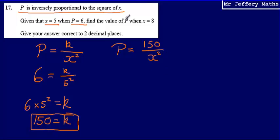So what we're asked to do is find the value of P when X equals 8. All that we now need to do is substitute in. So P is going to be equal to 150 divided by 8 squared.